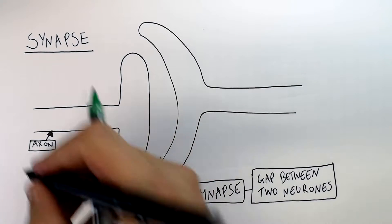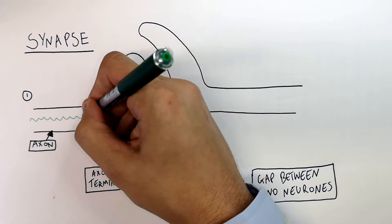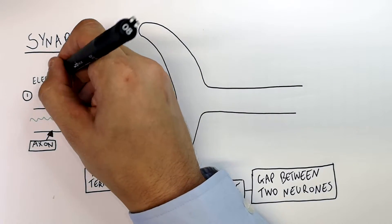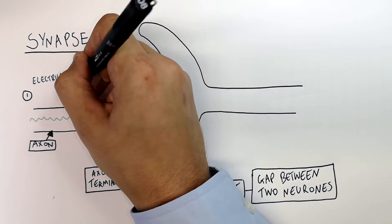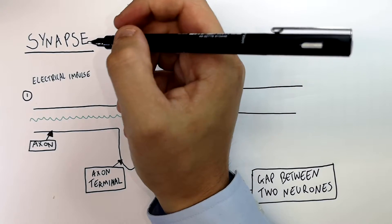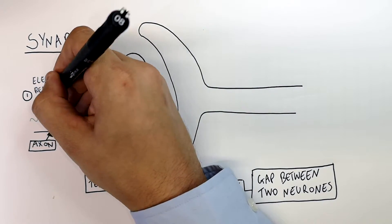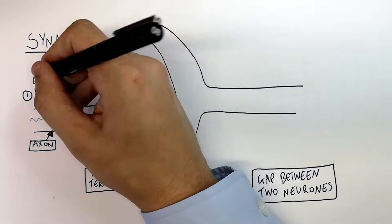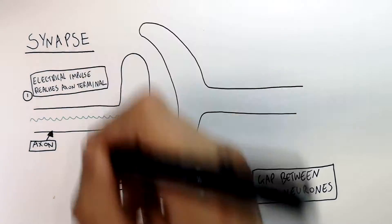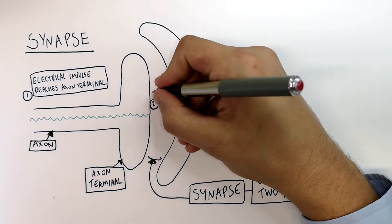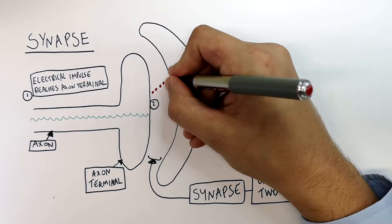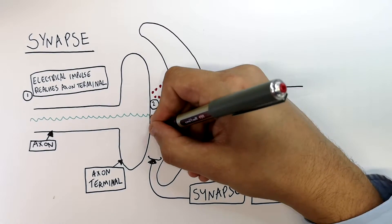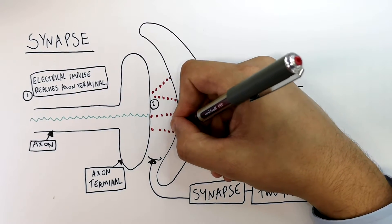So now the electrical impulse travels down the neuron. The electrical impulse reaches the axon terminal of one neuron. Then it gets to the synapse, where it releases chemicals called neurotransmitters across the synapse.